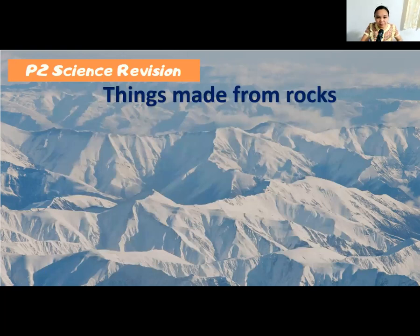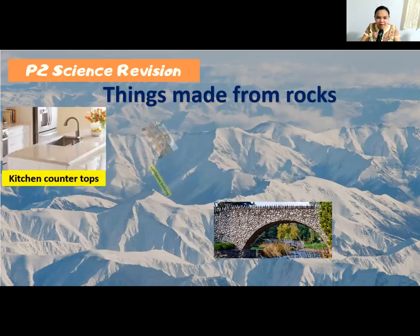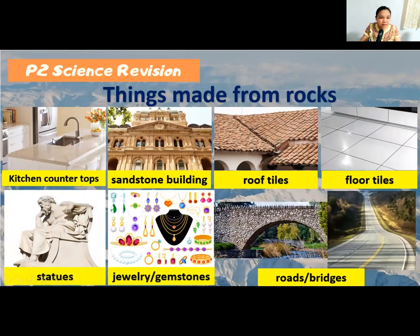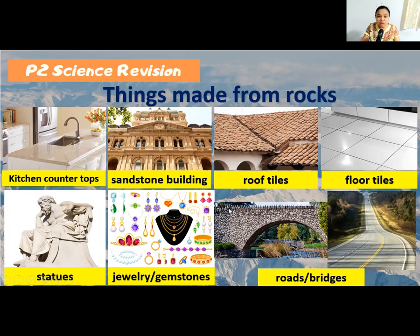Things made from rocks include kitchen countertops, sandstone buildings, roof tiles, floor tiles, statues, jewelry or gemstones, and roads and bridges. Kitchen countertops can be made from granite or marble, statues from marble, and jewelry from gemstones. Bridges and roads are also made from rocks.